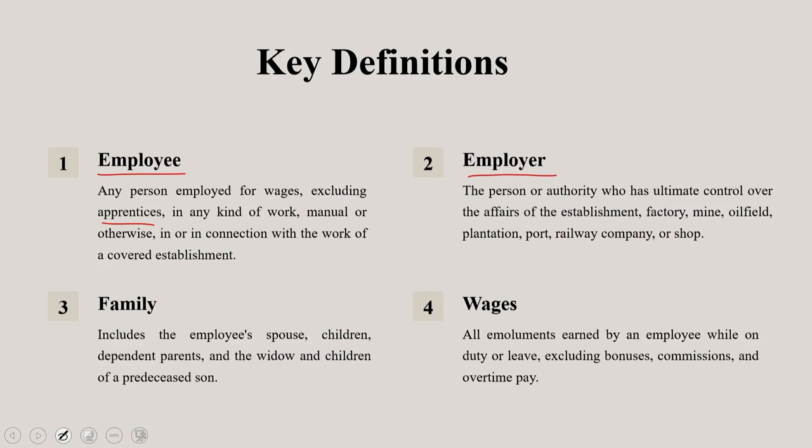The third important element is family. Family, in relation to an employee, shall be deemed to consist of: in the case of a male employee — himself, his wife, his children whether married or unmarried, his dependent parents, the dependent parents of his wife, and the widow and children of his pre-deceased son, if any.